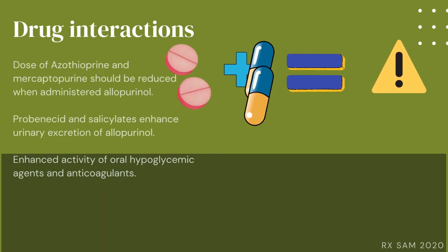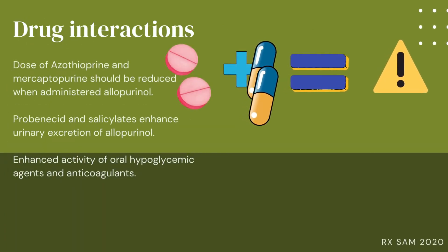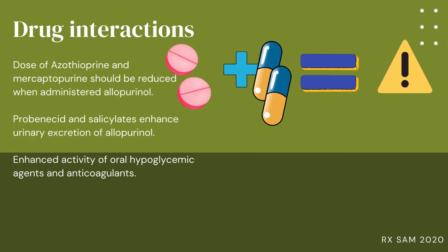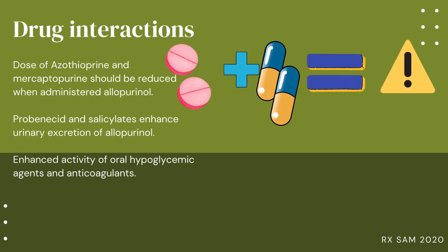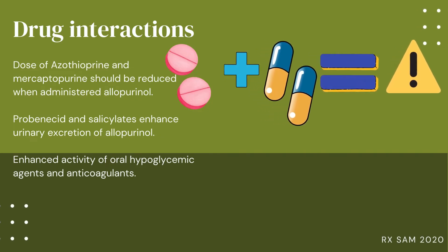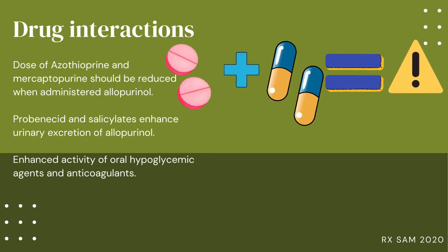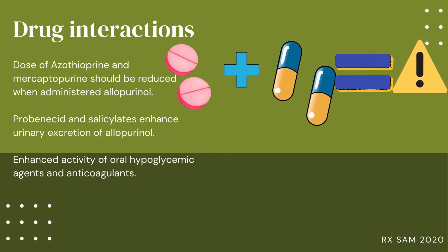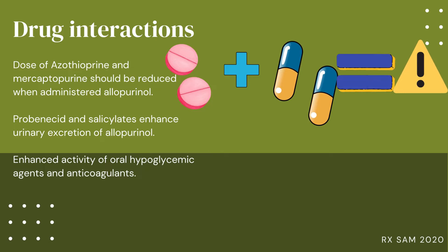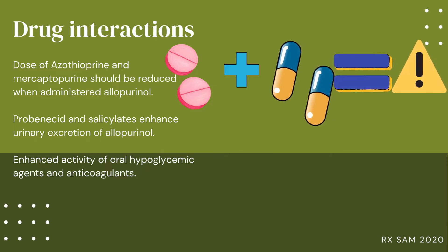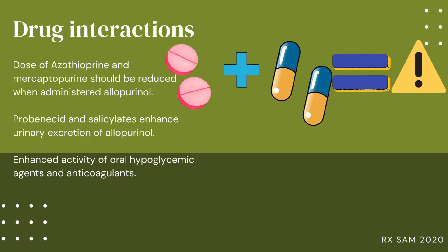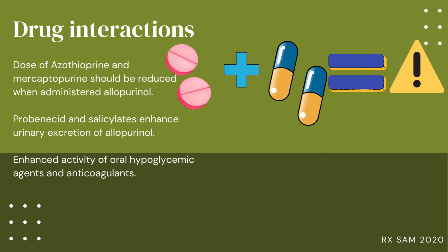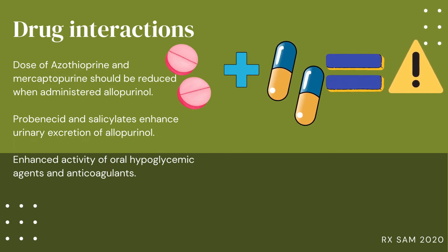Drug interactions: The dose of azathioprine and mercaptopurine should be reduced when administered with allopurinol. Probenecid and salicylates enhance urinary excretion of allopurinol. There is also enhanced activity of oral hypoglycemic agents and anticoagulants.